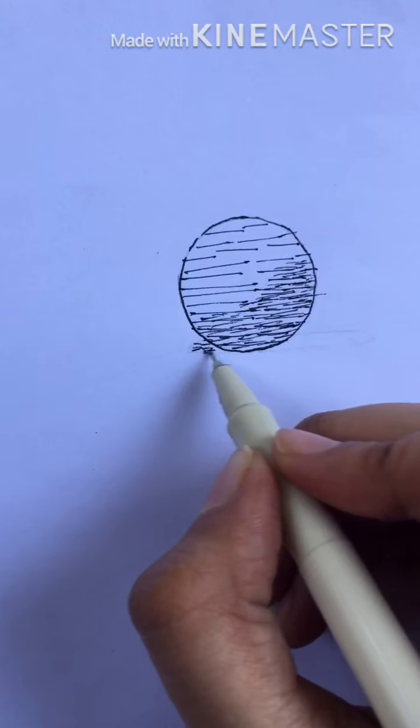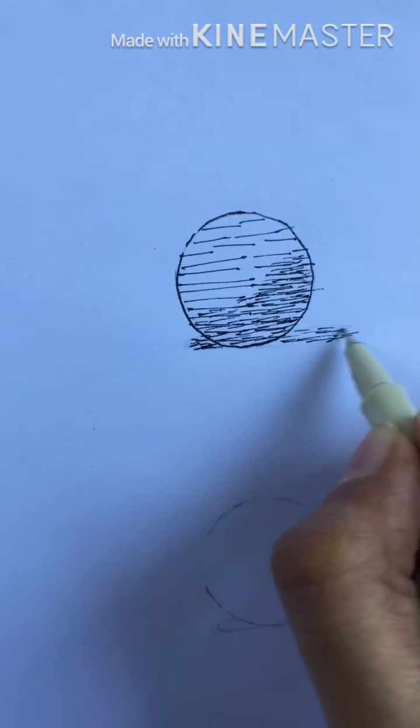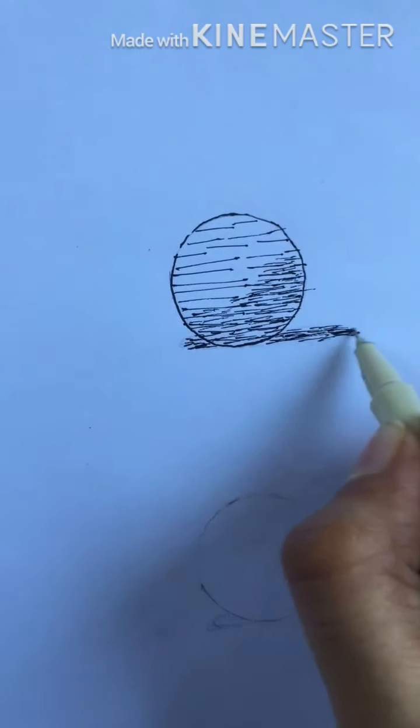Let us draw a shadow. The shadow will be darker, so we are using more lines parallel to each other.